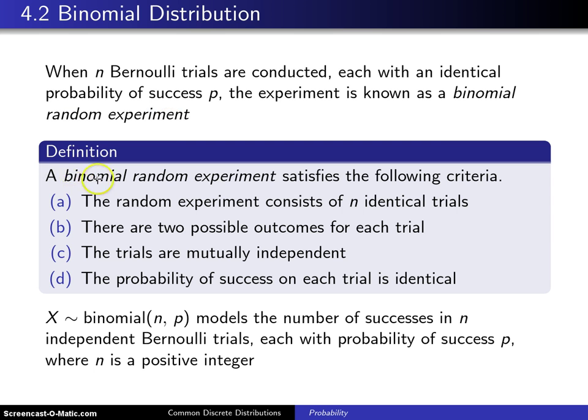So here is the definition of a binomial random experiment. It satisfies the following criteria. First, the random experiment consists of n identical trials. n will be set ahead of time and it is a fixed positive integer. Second, there are two possible outcomes for each trial. Those two outcomes are generically referred to as success and failure.